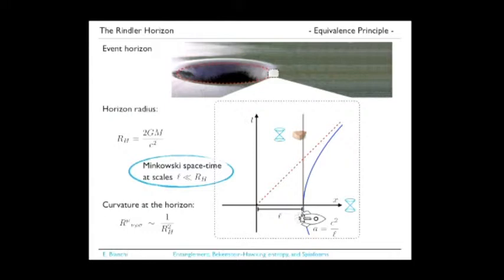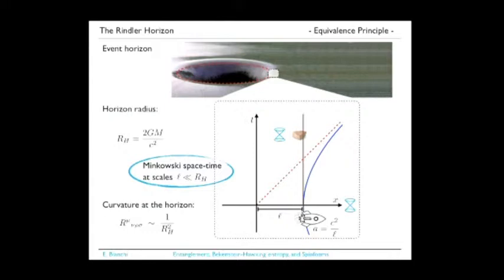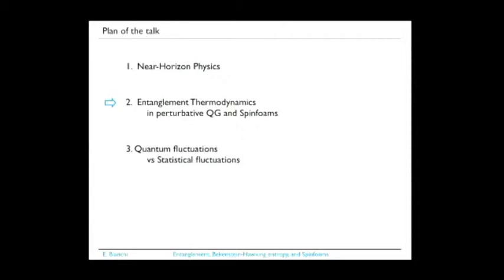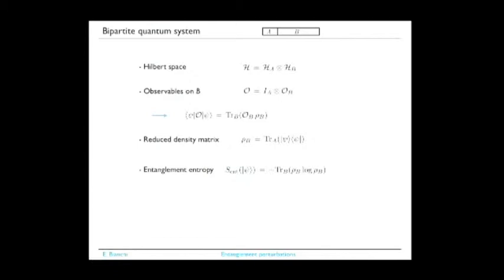I focus on this small near-horizon region and describe the physics there, starting with perturbative quantum field theory and perturbative quantum gravity, because in this regime we do not expect big genuine quantum gravity effects. Then I'll move to spin foams. So in the following I'll speak about entanglement thermodynamics in Minkowski space. I should first tell you about the standard notions of bipartite quantum systems like the ones I described before, where the Hilbert space is a tensor product of part A and part B.